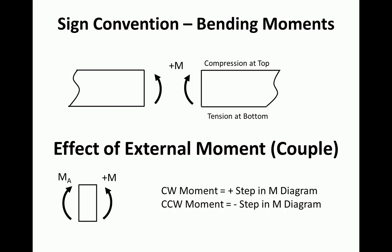So our sign convention works like this. If we have a clockwise moment, that will create a positive step in the moment diagram. A counterclockwise moment is a negative step in the moment diagram. So you have to be careful about that. But do remember, if you do it the wrong way, then your moment diagram probably won't end up at 0, so you'll know you've done something wrong.